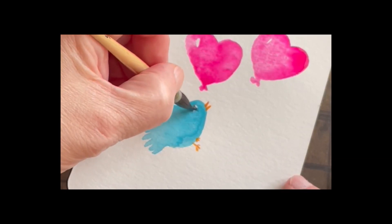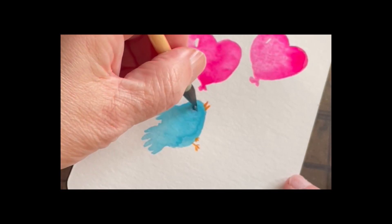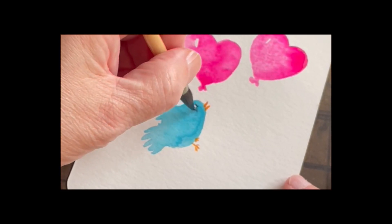We'll finish the bird with a little bit of Indigo. Put in the eye and then just do a little bit of shading.